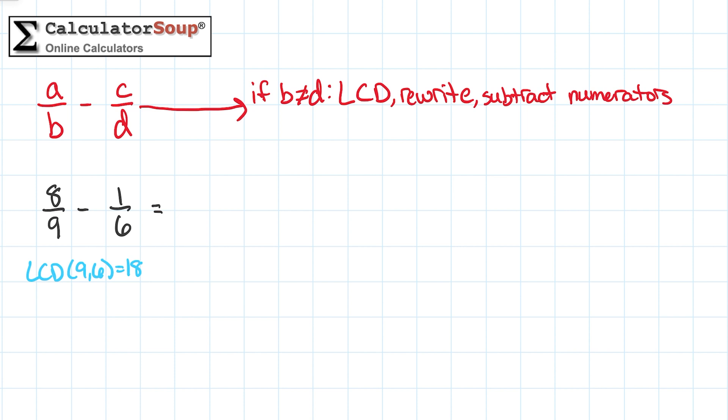To find the equivalent fraction, multiply both the numerator and denominator of each fraction by the same number so that we get 18 as the denominator.